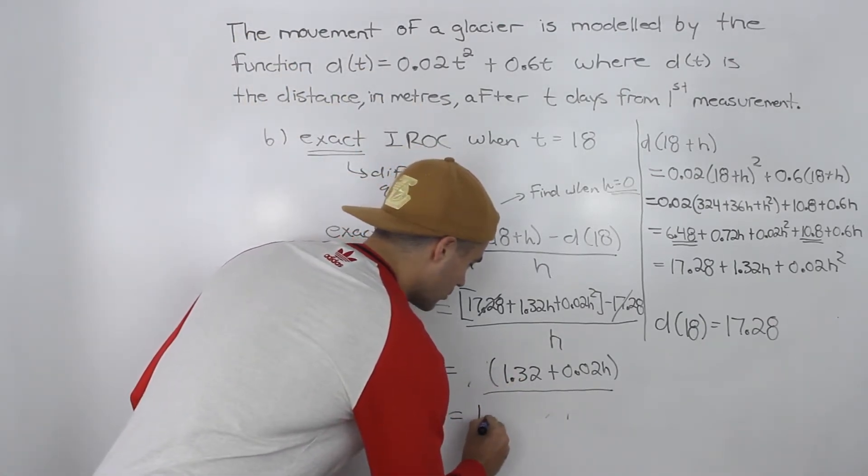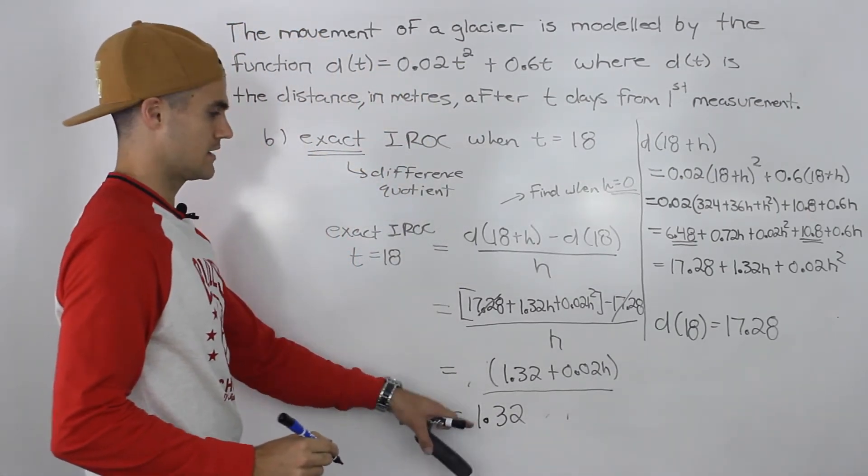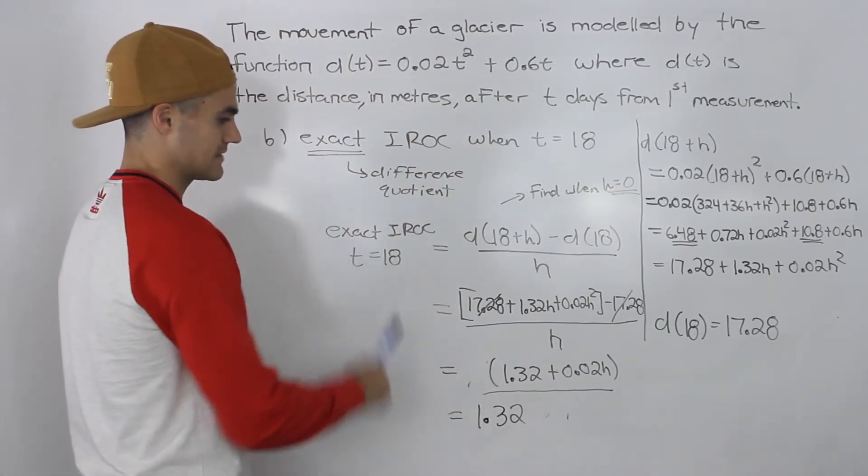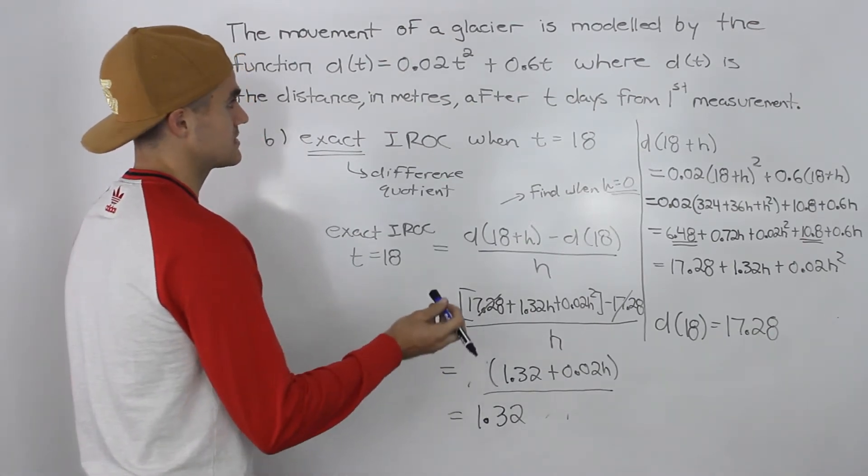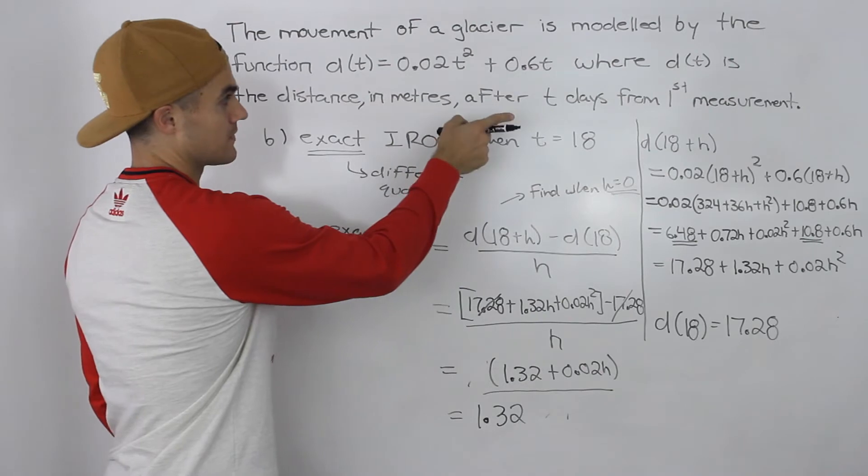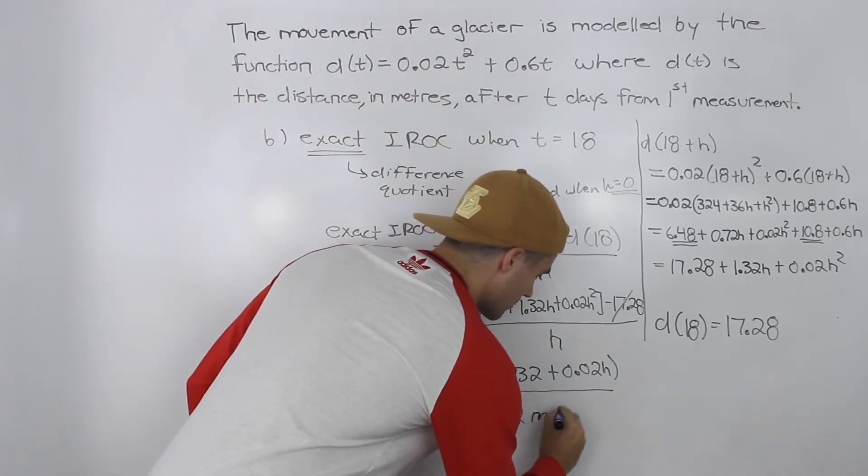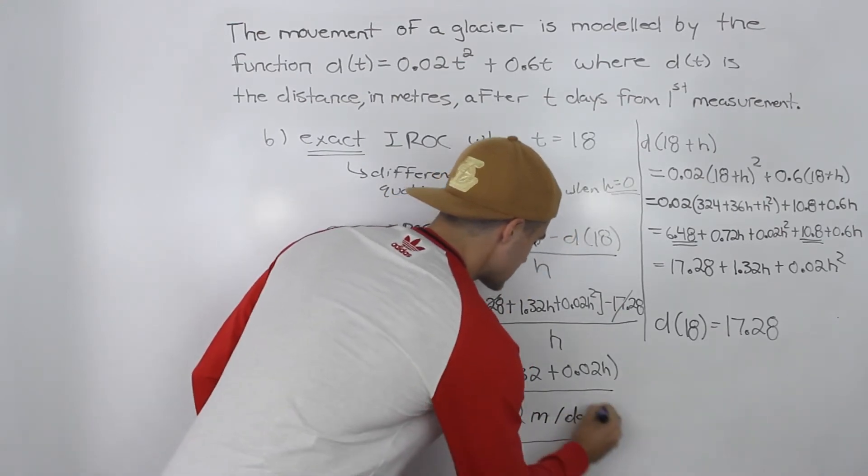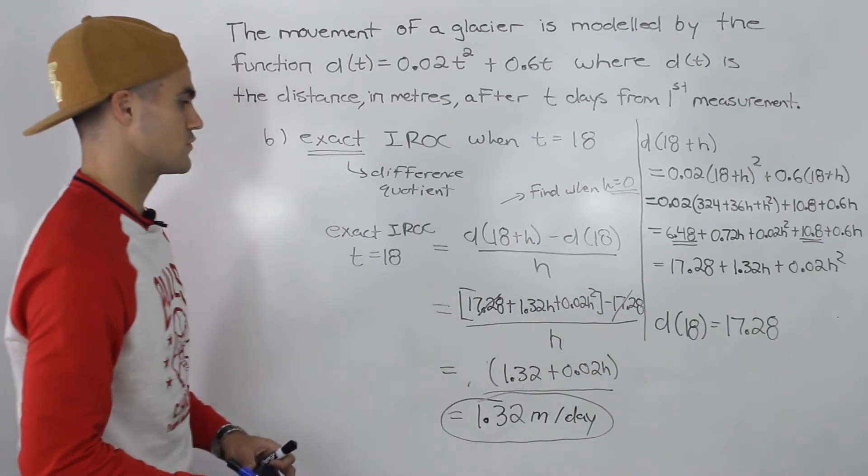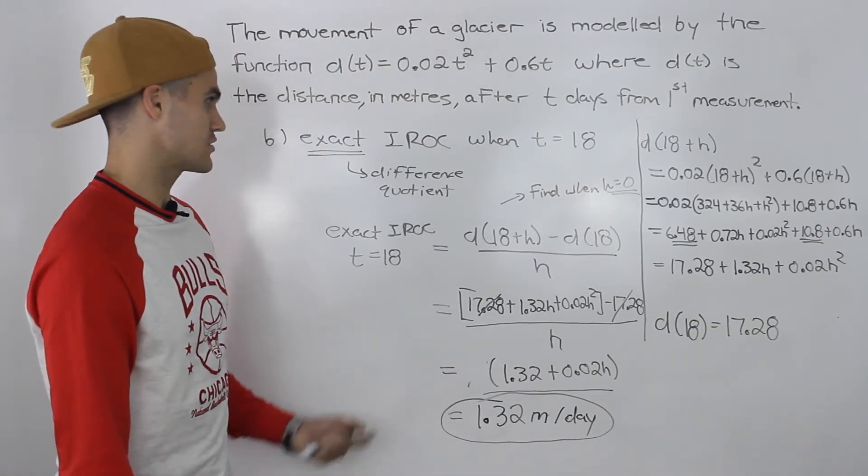We're left with 1.32, and that is the exact instantaneous rate of change at the 18-day mark. Don't forget your units: the distance is in meters and t is in days, so this is 1.32 meters per day. That's how fast this glacier is moving at the 18-day mark.